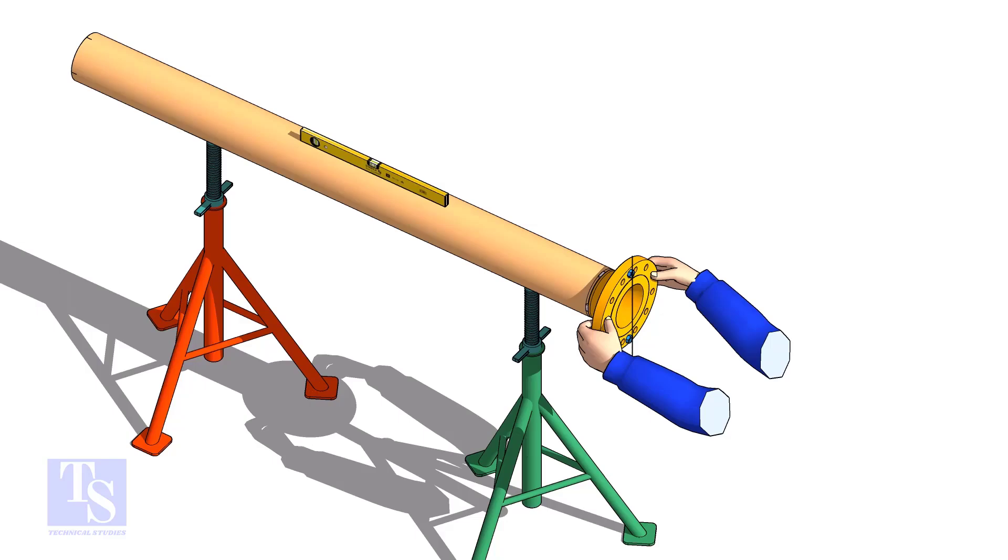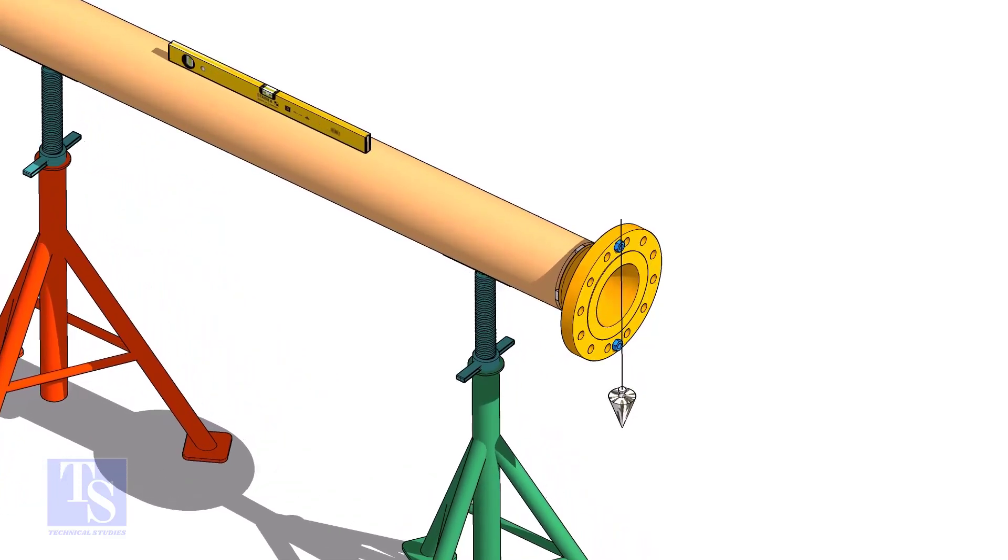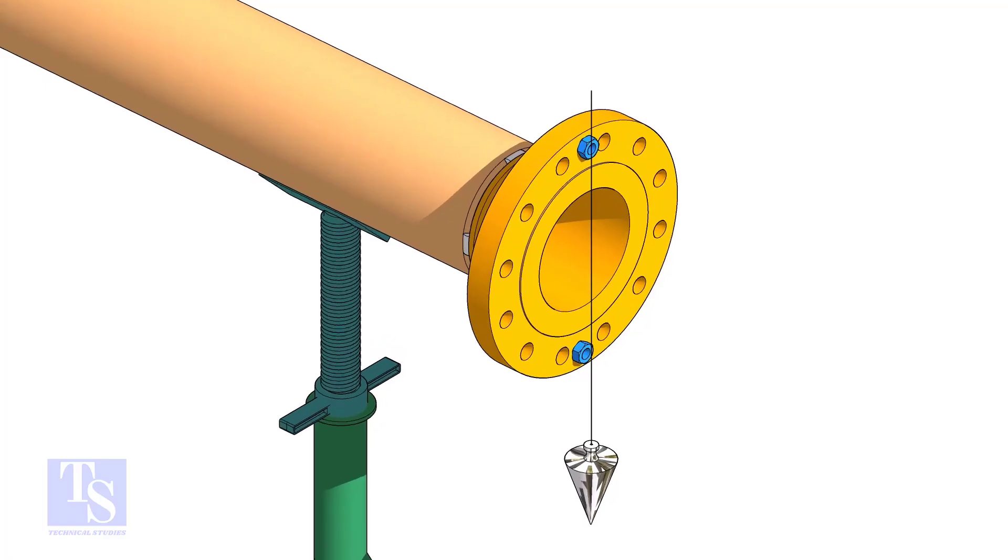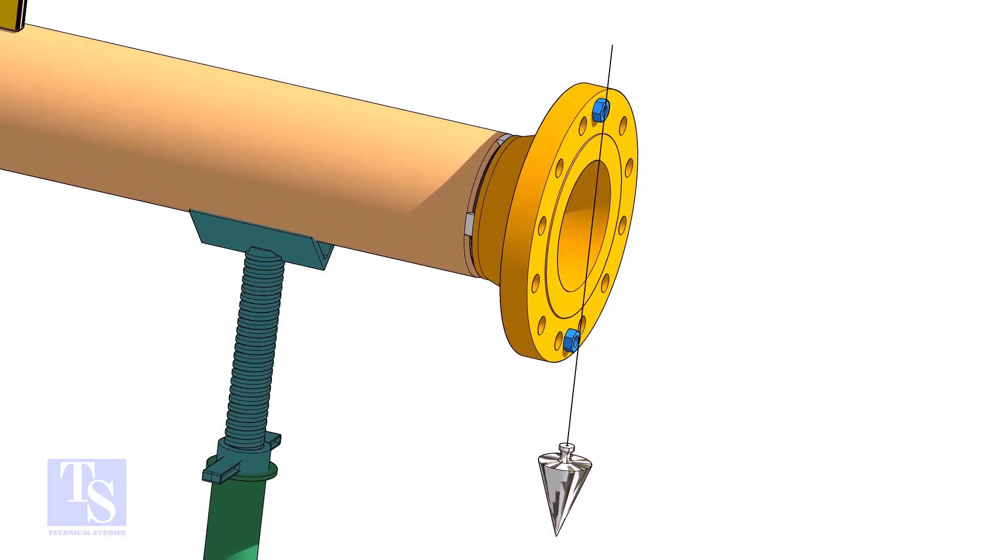In this method, let us learn how to fit up a flange with a pipe using a plumb. Level the pipe, put a plumb through the center of the flange on a nut.